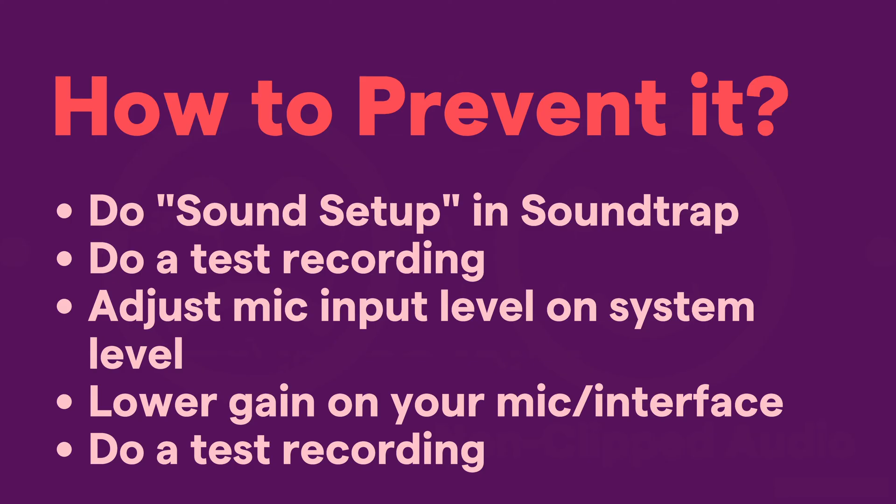So how do you prevent it? First, make sure that you always do the sound setup process in Soundtrap. Once you've done that, do a quick test recording and verify that everything sounds okay. But if you're still having issues after your test recording, you might need to adjust your mic input level on the system level — which basically means your mic is already clipping before the signal gets to Soundtrap. So Soundtrap can't fix that, even if you do the sound setup.